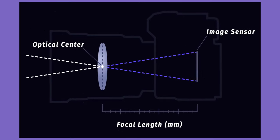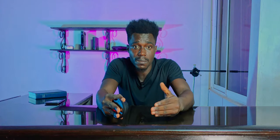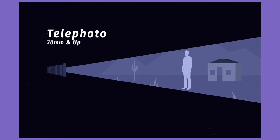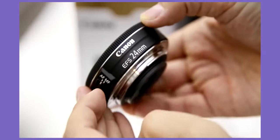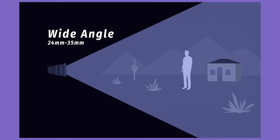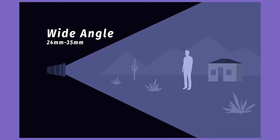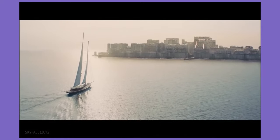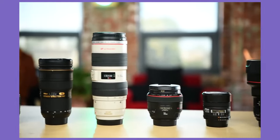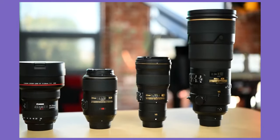The longer the focal length, such as a 100mm lens, the narrower your angle of view. Also, the shorter the focal length, such as 24mm, the wider your angle of view. I will take time to explain the two categories of lens — prime lens and zoom lens — in my next video.